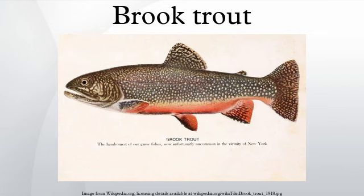Brook trout are native to a wide area of eastern North America, but are increasingly confined to higher elevations southward in the Appalachian Mountains to northern Georgia and northwest South Carolina, Canada from the Hudson Bay Basin east, the Great Lakes and St. Lawrence system, the Canadian Maritime Provinces, and the Upper Mississippi River drainage as far west as eastern Iowa. Their southern historic native range has been drastically reduced, with fish being restricted to higher elevation, remote streams due to habitat loss and introductions of brown and rainbow trout. As early as 1850, the brook trout's range started to extend west through introductions. The brook trout was eventually introduced into suitable habitats throughout the western U.S. during the late 19th and early 20th centuries at the behest of the American Acclimatization Society and by private, state, and federal fisheries authorities.